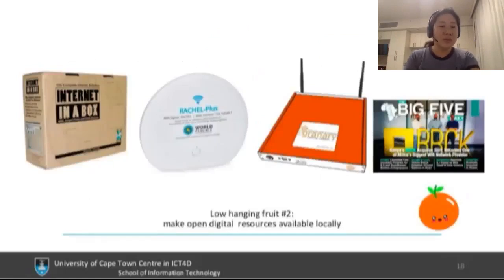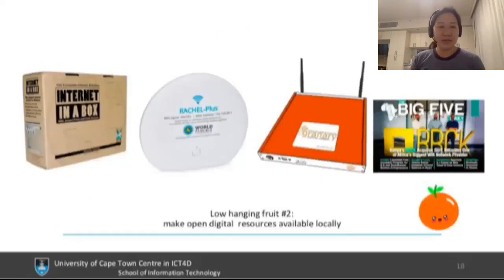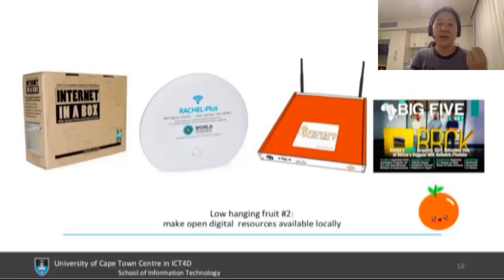Low hanging fruit number two: make open digital resources available locally. People have been doing this for 20 years — I put a copy of Wikipedia in an orphanage in Tijuana back in 2004 or 2006. These solutions have only gotten more affordable and better over time. But this is still incomplete, because if you look at these open digital resources, they still haven't found a way to make it not just something you can access, but something you can actually contribute to. Editing Wikipedia on a local server doesn't edit the Wikipedia available to everybody else.